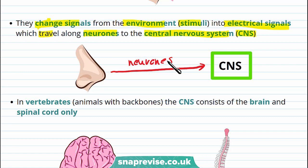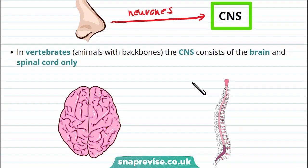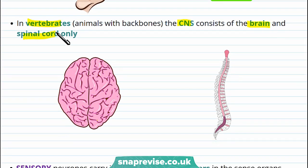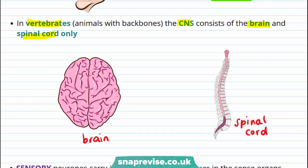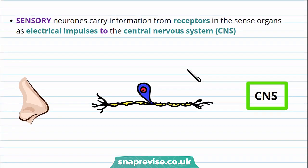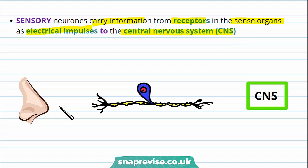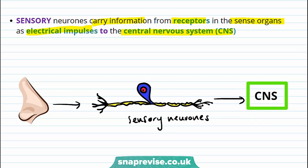The central nervous system is also another name for the coordinator. In vertebrates — animals with a backbone — the CNS consists of the brain and the spinal cord, and both of these are really important in coordinating our responses to stimuli. Sensory neurons carry information from receptors in the sense organs, such as the nose or the tongue, as electrical impulses to the central nervous system. So when we smell something, this information is transported through sensory neurons to the CNS.